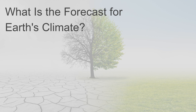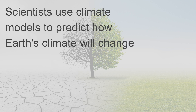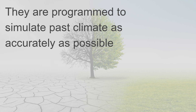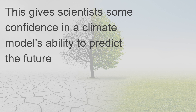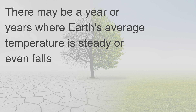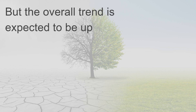What is the forecast for Earth's climate? Scientists use climate models to predict how Earth's climate will change. Climate models are computer programs with mathematical equations, programmed to simulate past climate as accurately as possible. This gives scientists some confidence in a climate model's ability to predict the future. Climate models predict that Earth's average temperature will keep rising over the next 100 years or so. There may be years where Earth's average temperature is steady or even falls, but the overall trend is expected to be up.